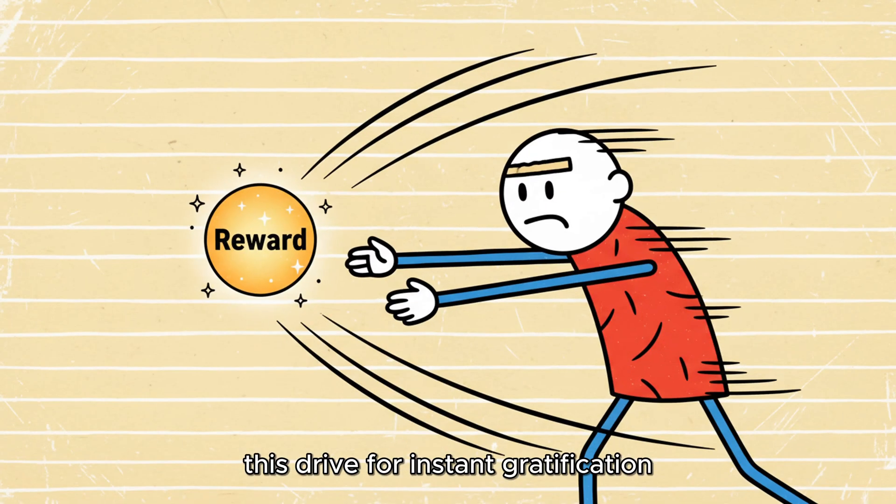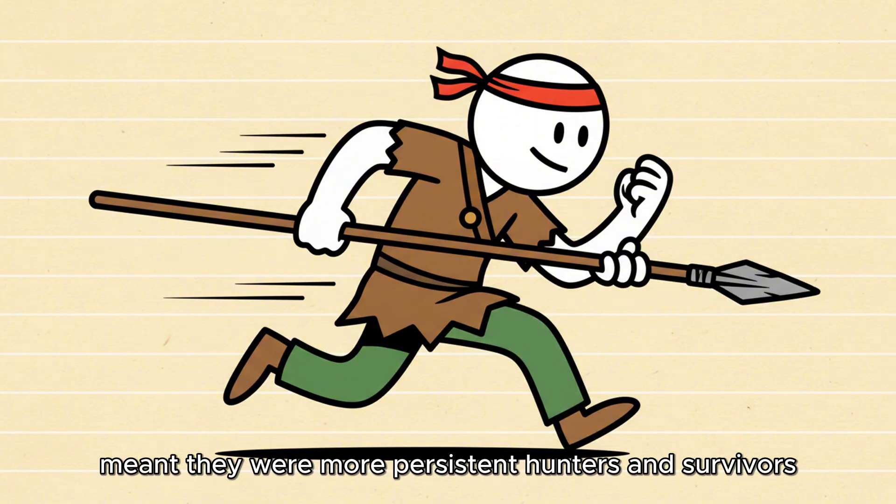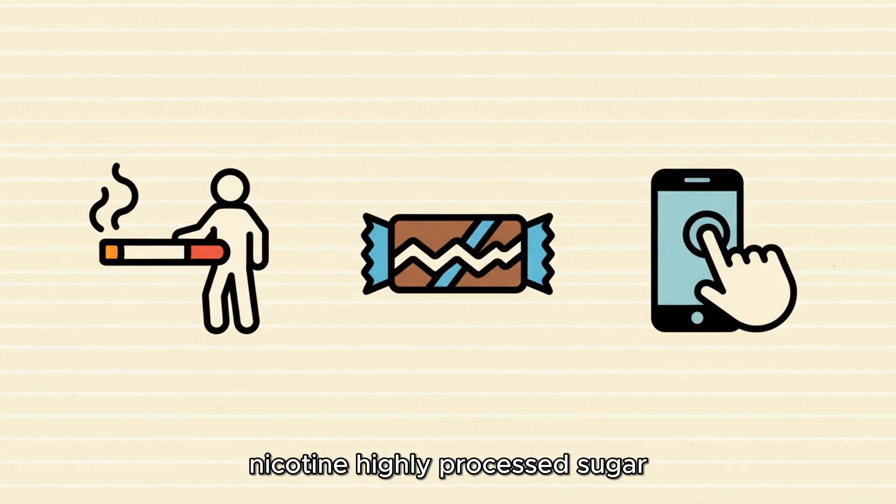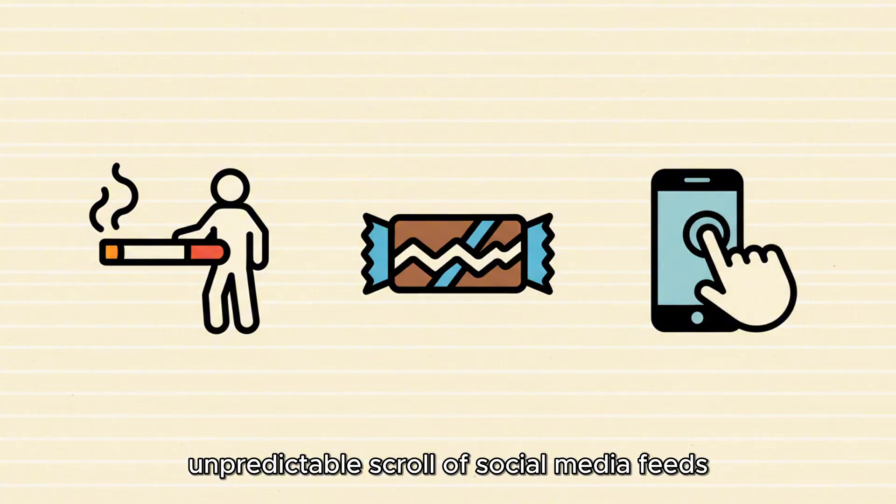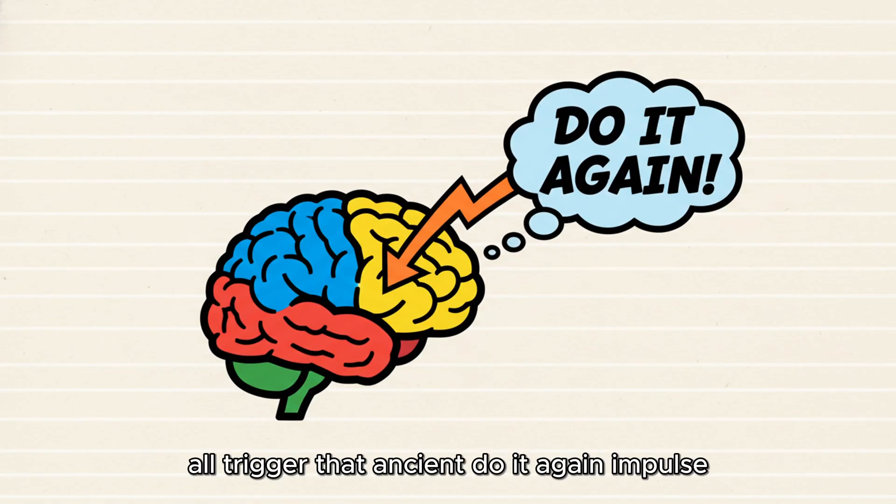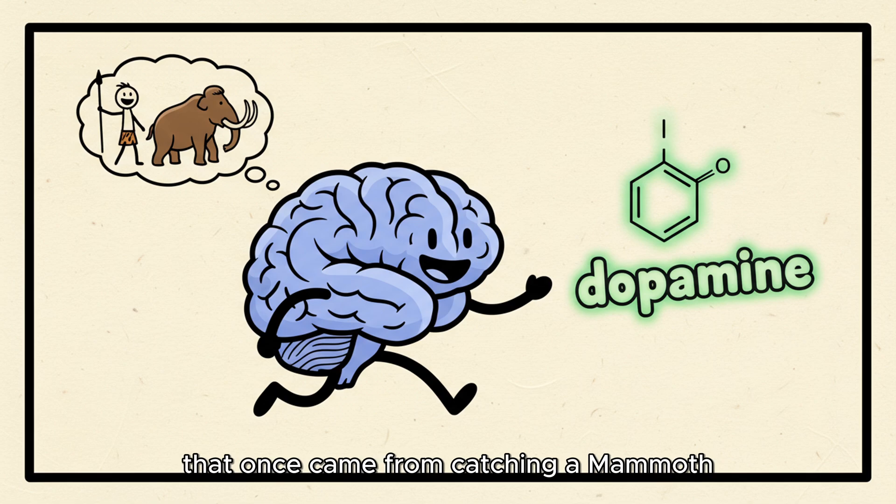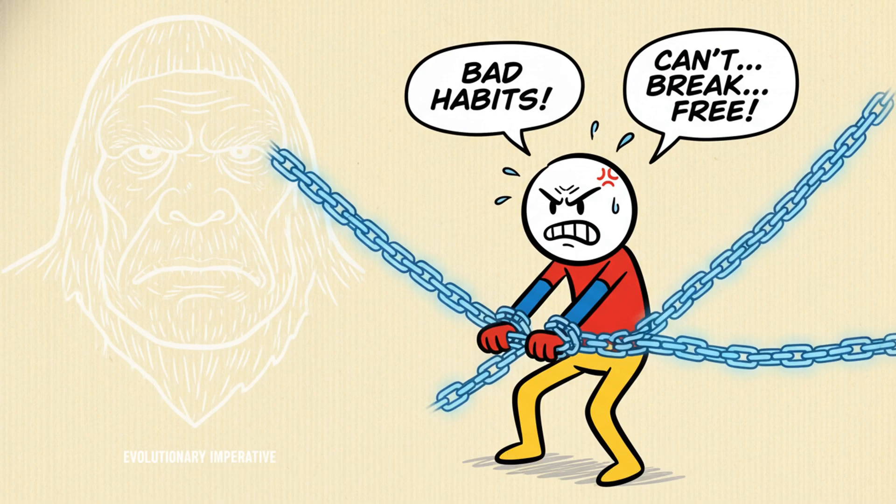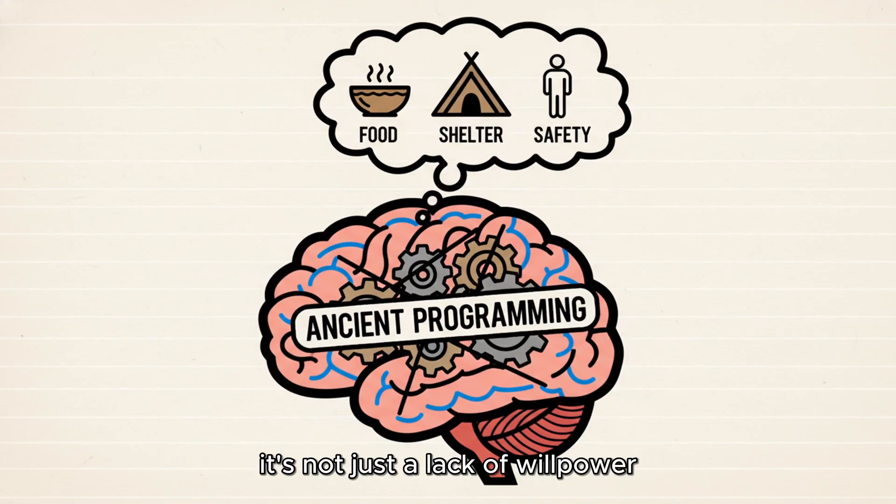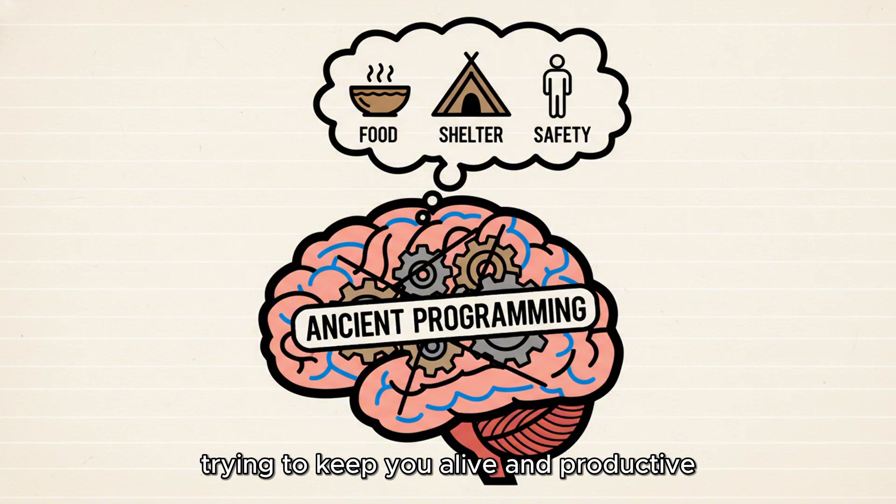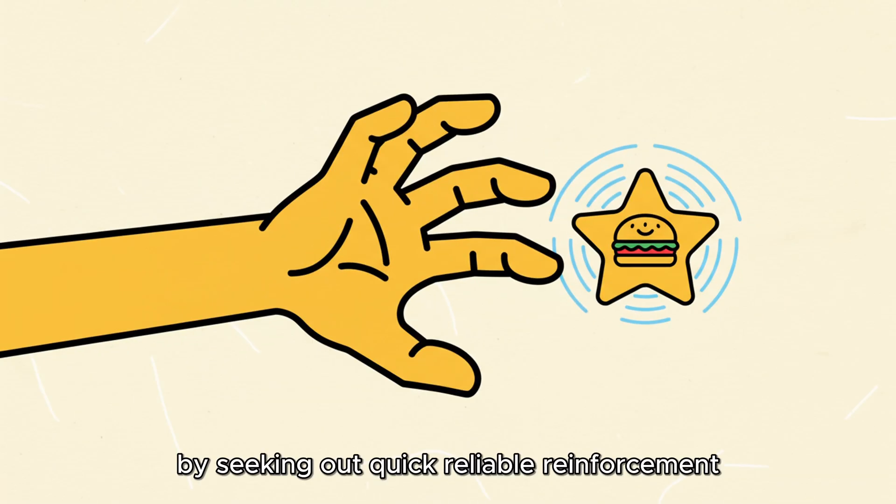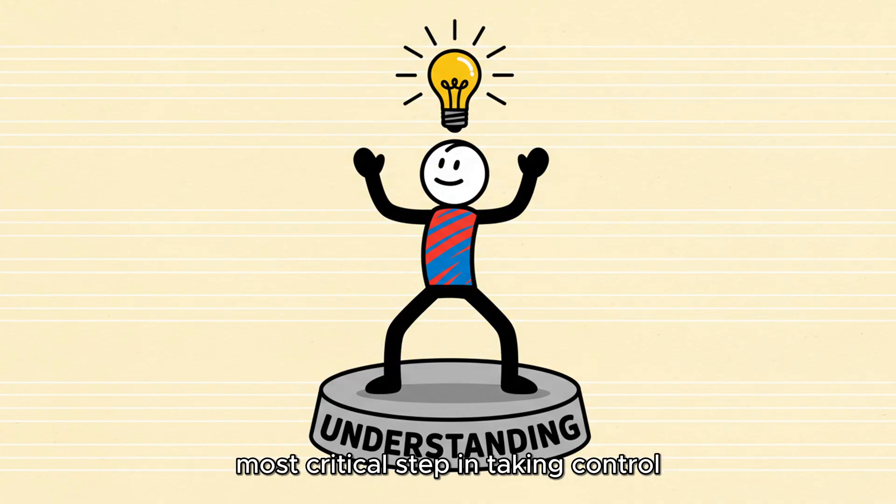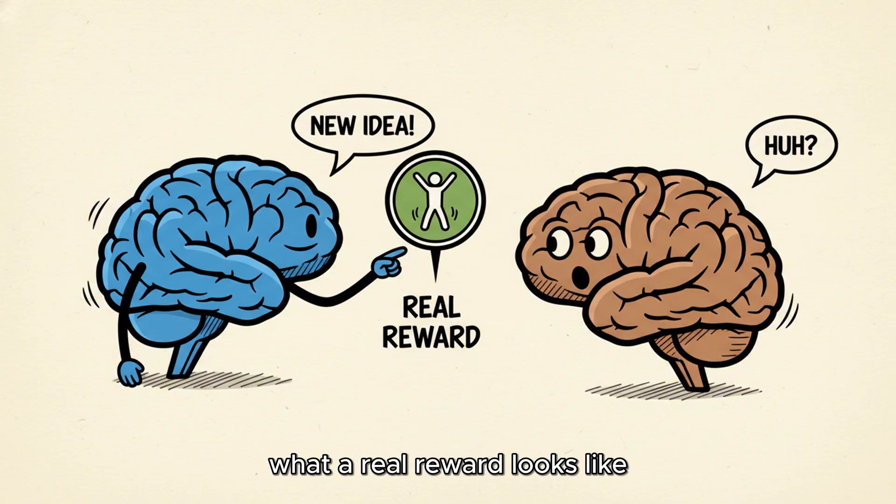This drive for instant gratification and reliable rewards meant they were more persistent hunters and survivors. But in the modern world, this highly efficient reward system gets hijacked. Nicotine, highly processed sugar, and even the endless, unpredictable scroll of social media feeds all trigger that ancient, do-it-again, impulse. Your brain is chasing the dopamine reward that once came from catching a mammoth, but now it's coming from the notification alert on your phone. If you struggle with breaking bad habits, remember that you are fighting an evolutionary imperative. It's not just a lack of willpower, it's ancient programming trying to keep you alive and productive by seeking out quick, reliable reinforcement. Understanding this genetic predisposition is the first, most critical step in taking control. Your modern brain needs to teach your ancient system what a real reward looks like.